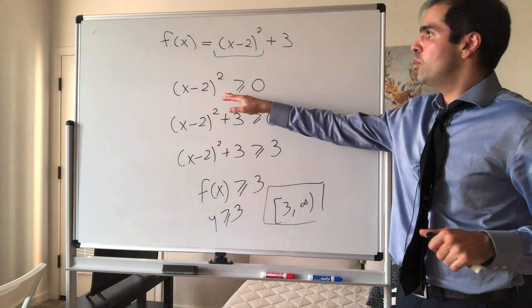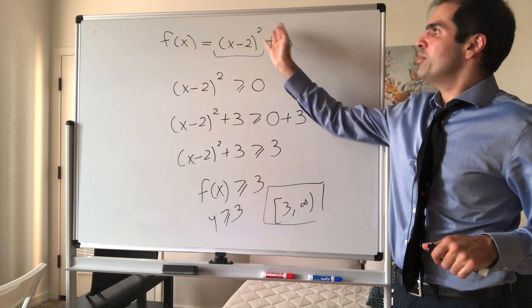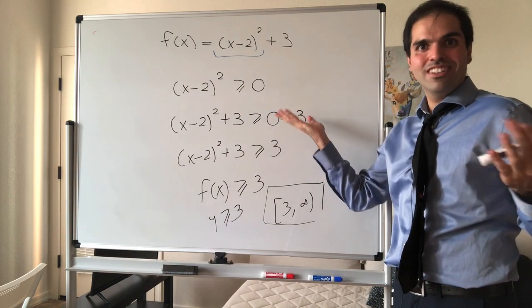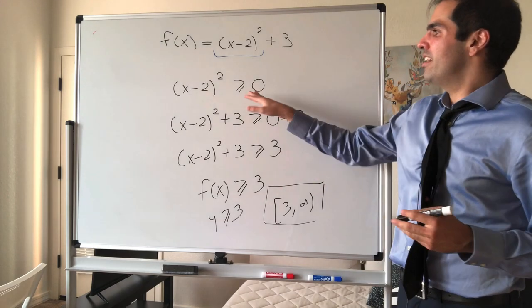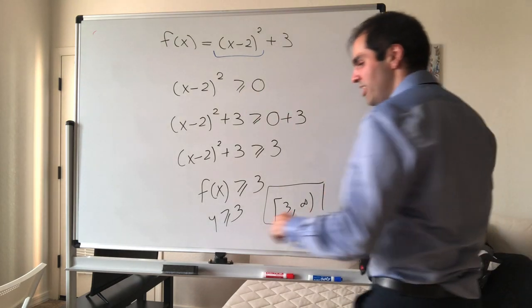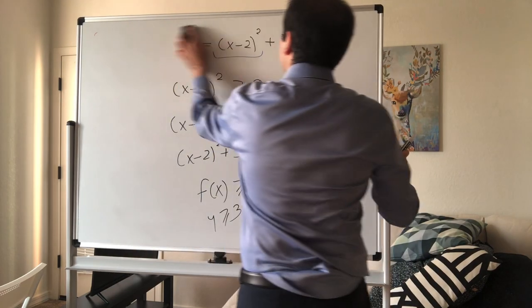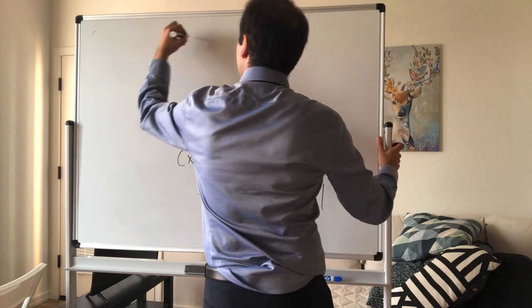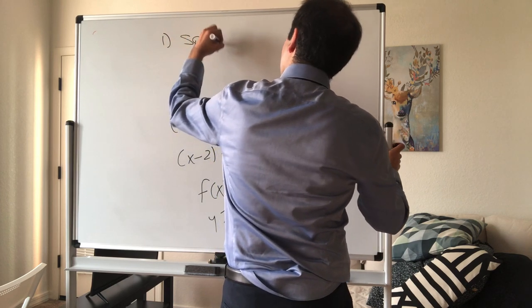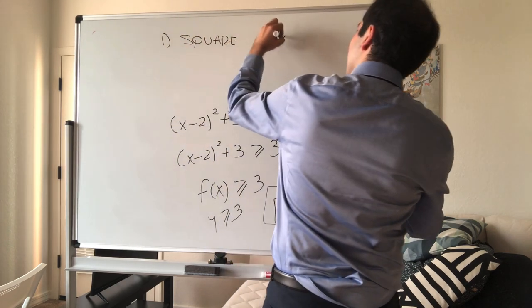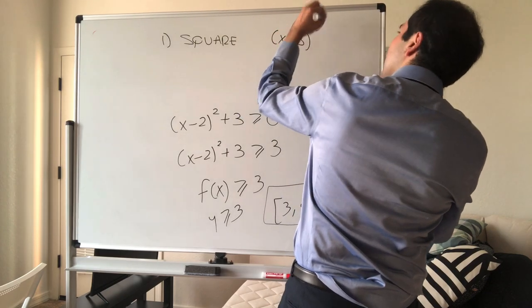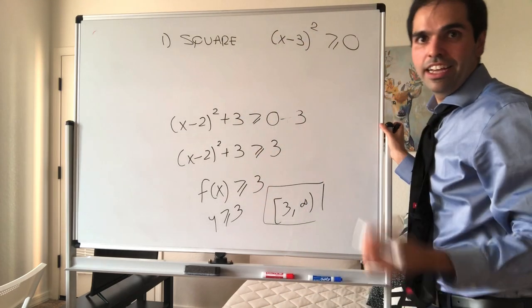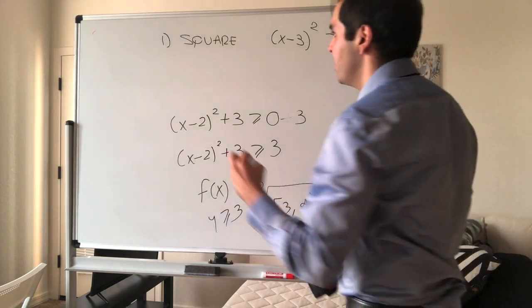And finally, to end this, here I said we start with x minus 2 squared is greater or equal to 0. But how do we know what to start with? Well, there are three things to watch out for. If you see a square, let's say x minus 3 squared, then automatically start with this being non-negative. Squares are non-negative.